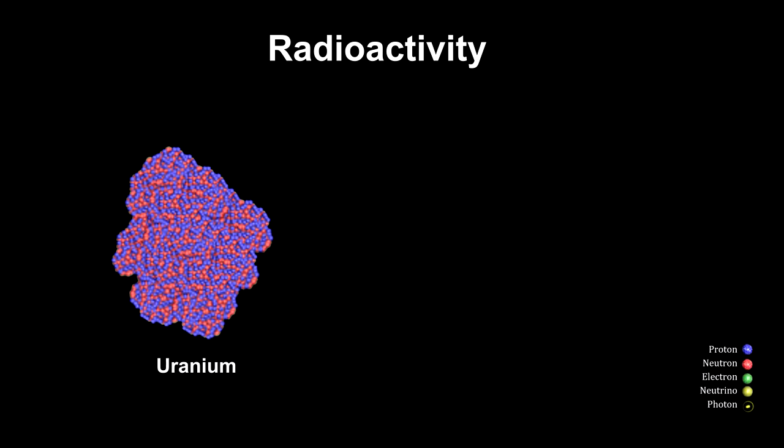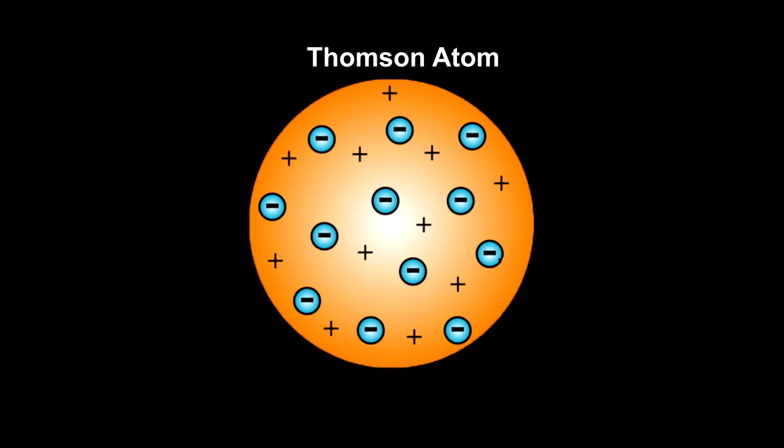It turned out the beta rays are high-speed electrons. The alpha particles were later found to be helium atoms without their electrons. And the gamma rays turned out to be high-energy photons, more energetic than x-rays. With alpha particles, Rutherford had something to fire at atoms to see if they were indeed like a positive pudding with embedded electrons.